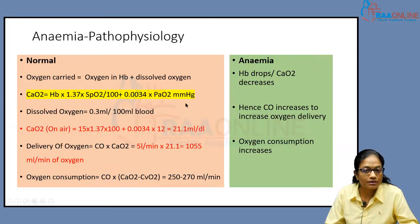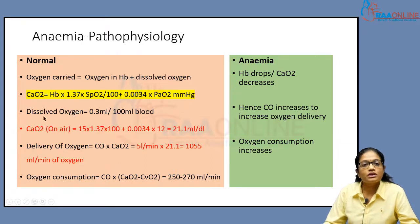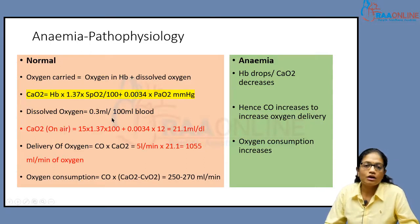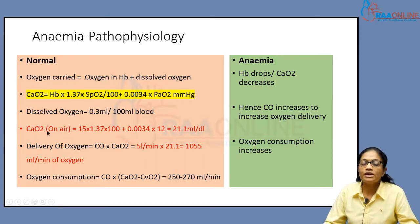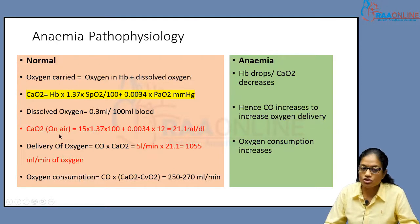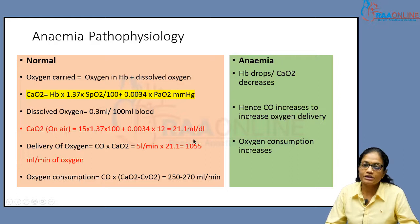This is how we calculate the arterial oxygen content. The dissolved oxygen is 0.3 ml per 100 ml, which is a very small part of the whole amount of oxygen carried. When a person is breathing air, which is 21% oxygen, the value is approximately 21.1 ml per deciliter.